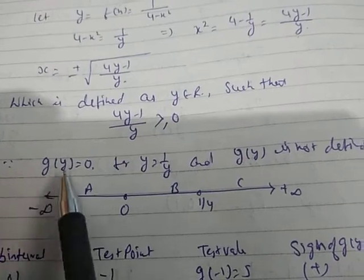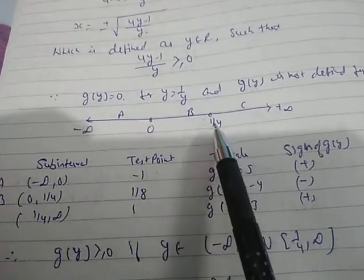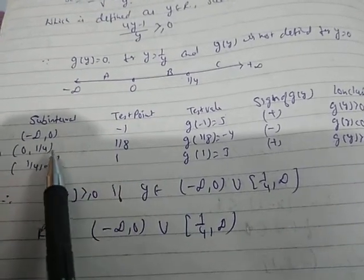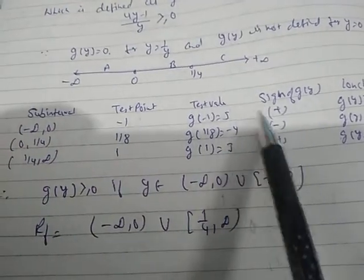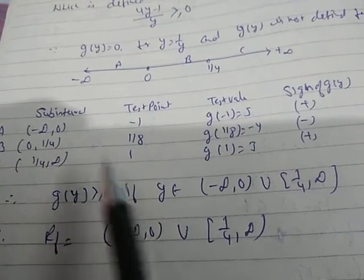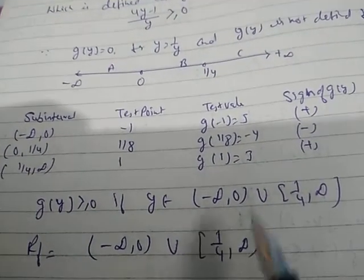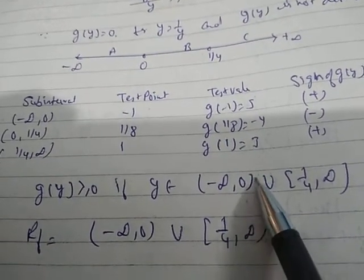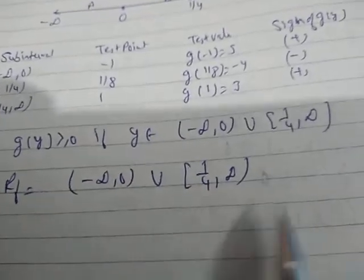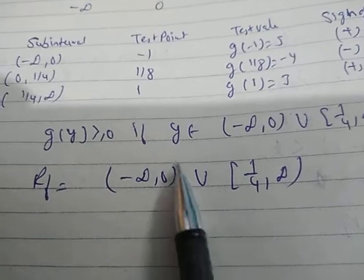Consider z(y) = (4y-1)/y. Setting z(y) = 0 gives y = 1/4, and z(y) is undefined at y = 0. The three intervals are A = (-∞, 0), B = (0, 1/4), and C = (1/4, ∞). Testing shows that intervals A and C give positive values. So g(y) ≥ 0 for y in (-∞, 0) ∪ [1/4, ∞). Since y ≠ 0, the interval at 0 is open. Therefore, the range is (-∞, 0) ∪ [1/4, ∞). Be careful to use open brackets when a value is not included and square brackets when it is.